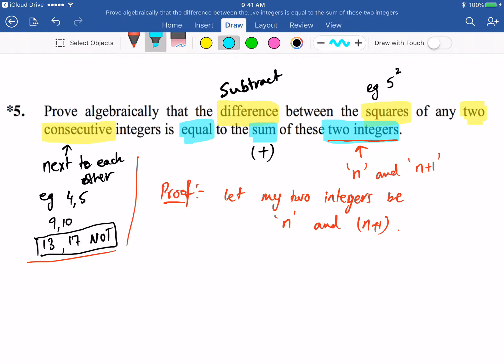So I have made my selection that my two integers are n and n plus one. What I'm going to do is address the difference between the squares. So I'm going to square them and do the difference. If I square my first, which will be n squared, and I square my second, which will be n plus one squared.